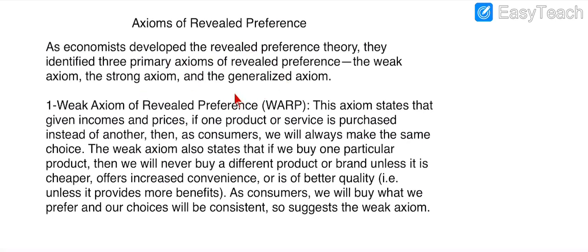The first axiom of Revealed Preference Theory — also presented by WARP — states that given income and prices, when the consumer knows his income and the prices of products, and one product or service is purchased instead of another, the consumer will always make the same choice.